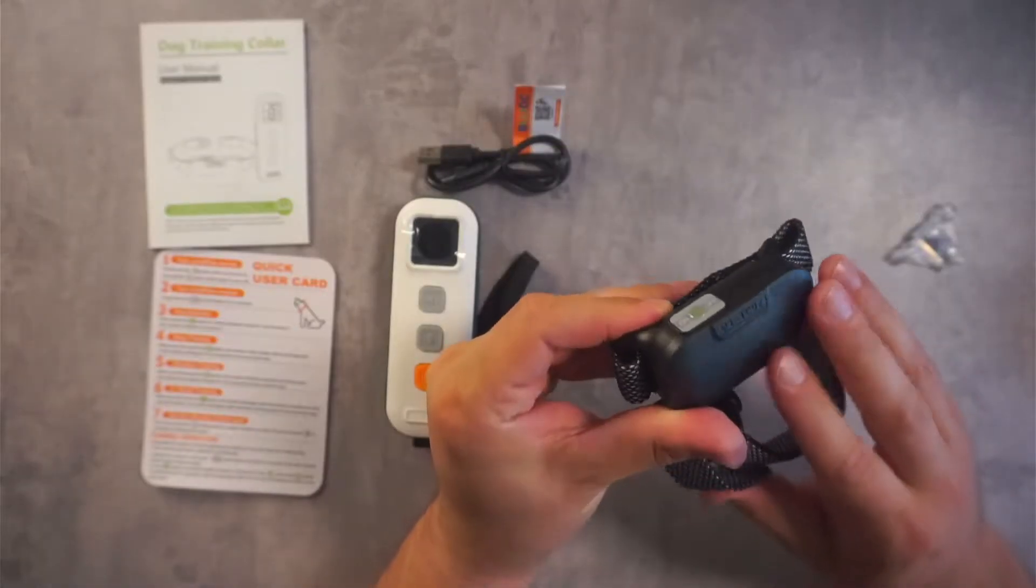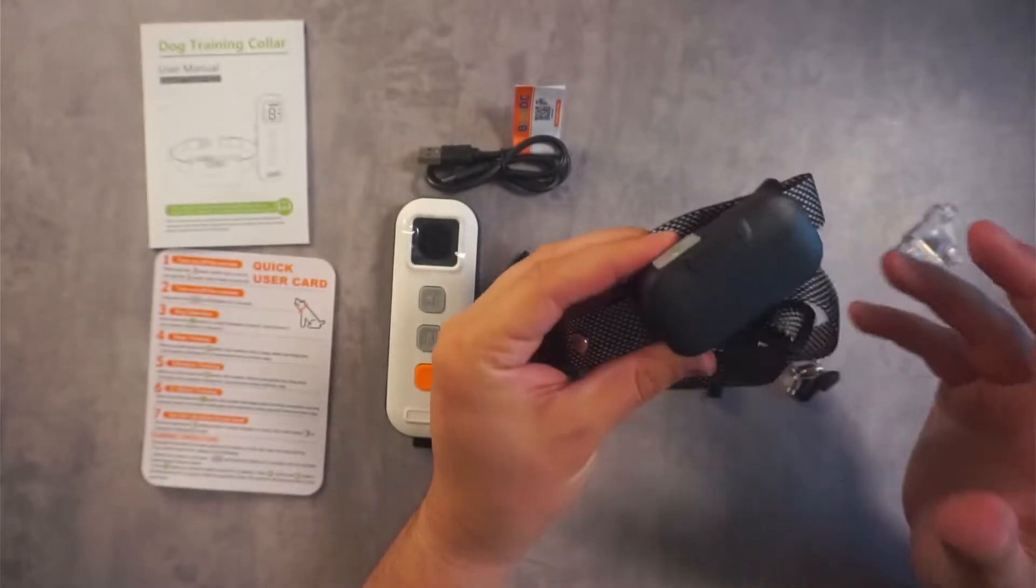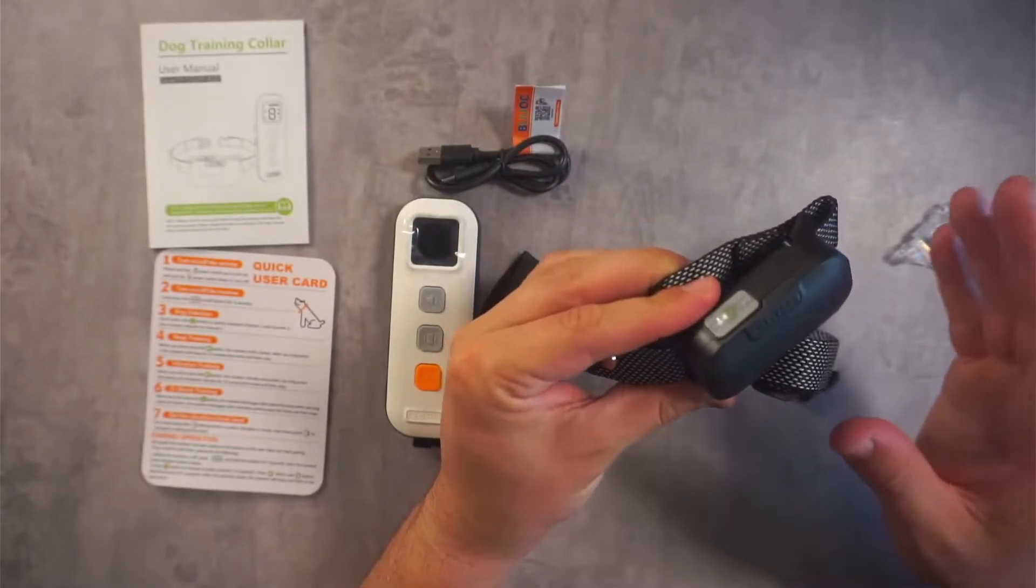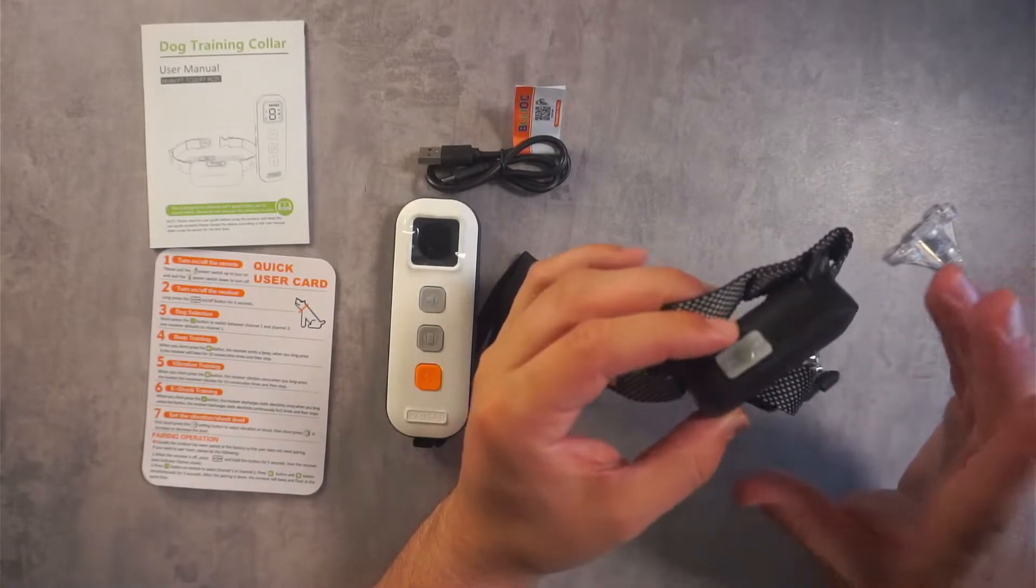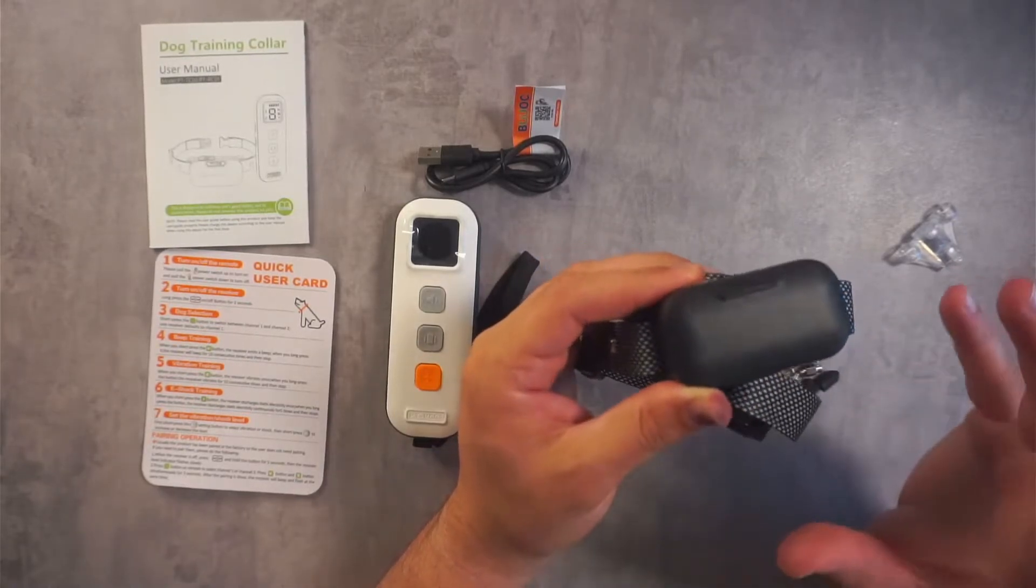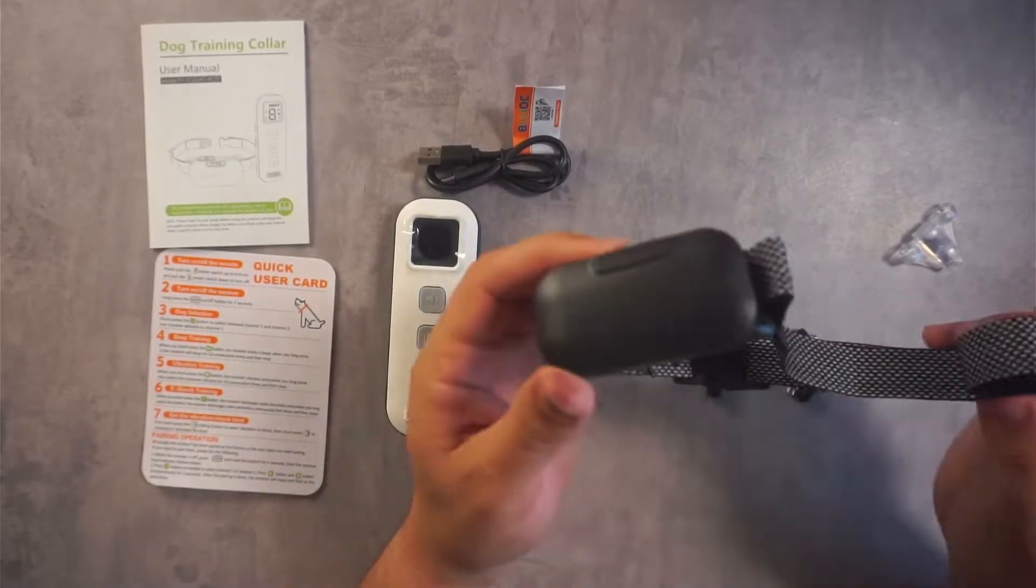This collar is 100% waterproof. It does have a nice adjustable band. So this will go from any dog from five pounds up to 110 pounds. It does last 30 to 45 days on a charge, and the charge only takes roughly two hours to give yourself a full charge. So this will actually last a long time.